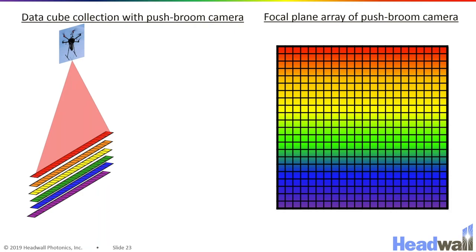In that way, every time you move one spatial pixel, you collect a new frame. And after you've flown past your entire scene, you will have collected your entire two-dimensional image.